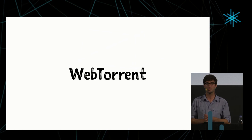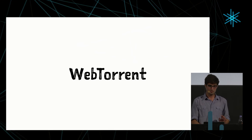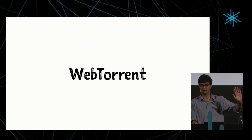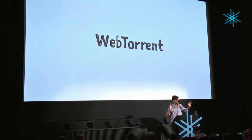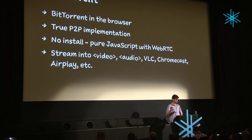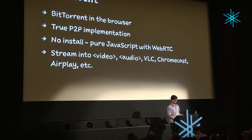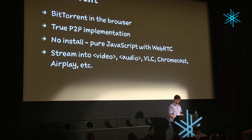The project I've been working on is called WebTorrent, another piece of the puzzle. We have offline-ability of apps and permanent caching, but how do we get data between peers? We have WebRTC for that. WebTorrent uses WebRTC to make BitTorrent work in the browser — true peer-to-peer. If I want to send you a file using WebTorrent, I'm actually connecting directly to you. You can stream files received from other people into a video tag, audio tag, VLC, Chromecast, or AirPlay.